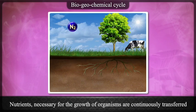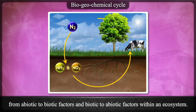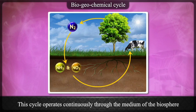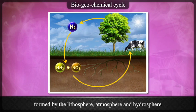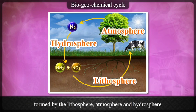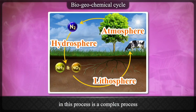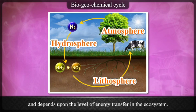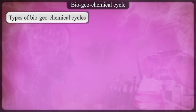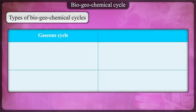Nutrients necessary for the growth of organisms are continuously transferred from abiotic to biotic factors and biotic to abiotic factors within an ecosystem. This cycle operates continuously through the medium of the biosphere formed by the lithosphere, atmosphere and hydrosphere. The recycling of biological, geological and chemical sources of nutrients is a complex process and depends upon the level of energy transfer in the ecosystem. Types of biogeochemical cycles: Gaseous cycle.